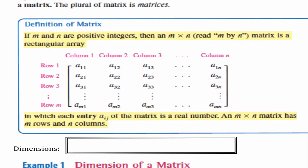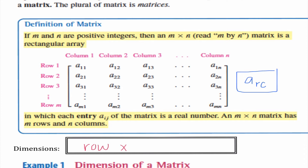The entries in the matrix are written as A sub RC. This tells us exactly where the entry goes — the row and the column. For example, A sub 2,3 means row 2, column 3. So it's important to remember A sub RC. The dimensions are row by column — that's something we need to have memorized.